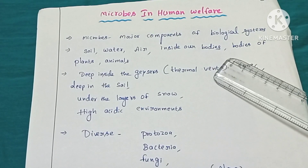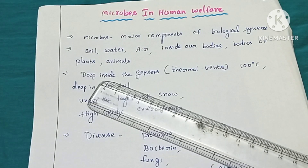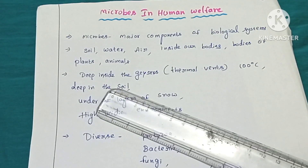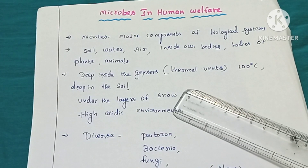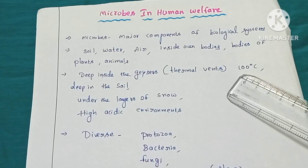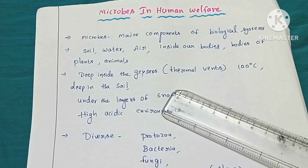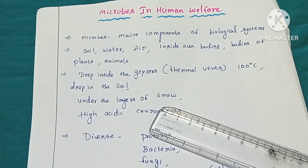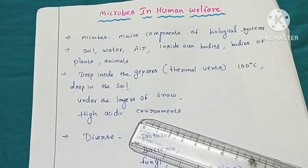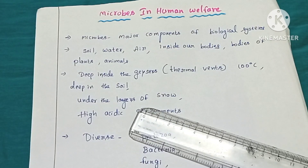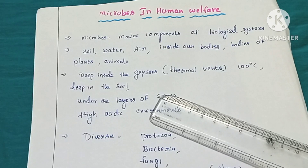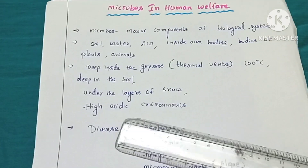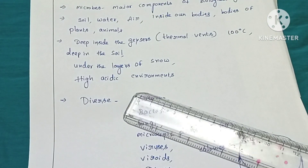Microorganisms are also present on the bodies of animals and plants. Not only that, they can exist deep inside geysers, that is hot thermal vents, where the temperature can exceed 100 degrees centigrade. They can also survive under layers of snow near tundra regions in very cold conditions, in volcanic regions, and in highly acidic environments.